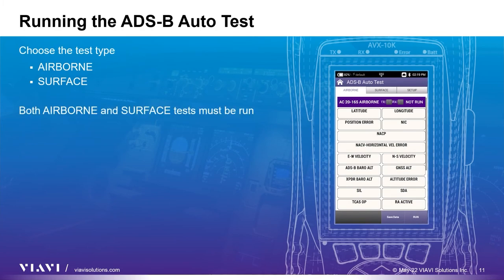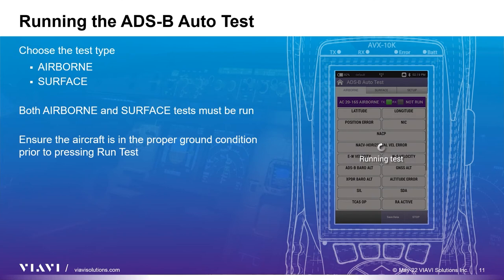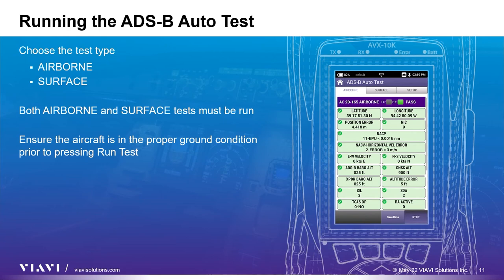Now that the setup is complete, choose either the airborne or surface test depending on how the aircraft is configured. In this example, the airborne test is performed first, but both tests will need to be run to get a complete test. Press run to start the test. The data is collected from the aircraft squitters, as shown here. Once all registers are populated, a pass-fail indication will be shown. The test continues to monitor the aircraft's squitters and compare against the referenced altitude, latitude, and longitude until the stop key is pressed.